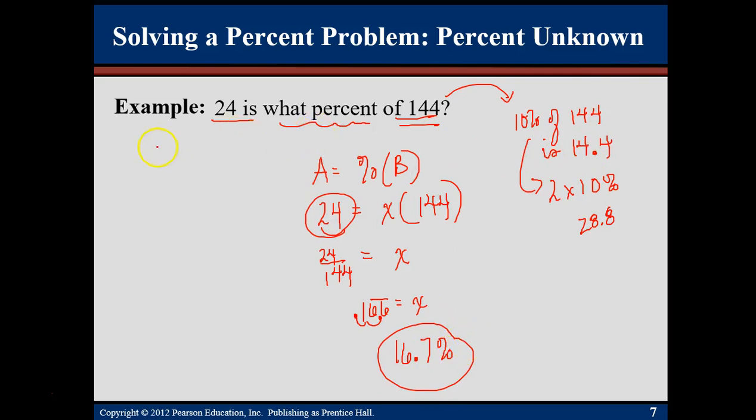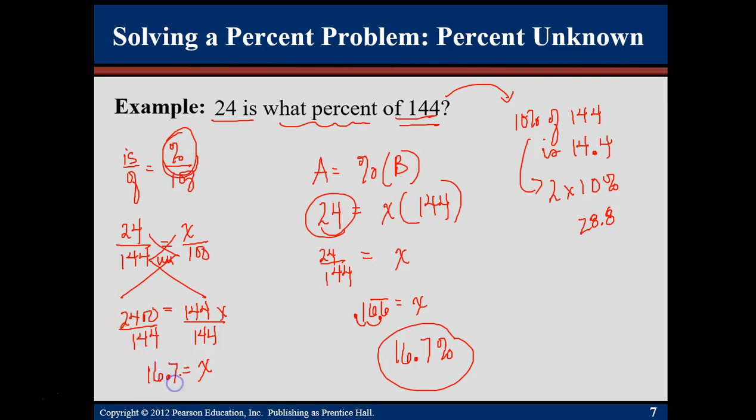If I wanted to use the is over of for this one, I would have 24 over 144 equals x over 100. Cross multiply, I get 2400. Here's my diamond, equals 144x. And you see that we have almost the same thing when we divide by the 144, but I have these two extra zeros. That's kind of nice, because when you're done, you find this top part that already has the percent. So you would get a 16.7 when you round to the nearest tenth. You don't have to then change it to a percent.